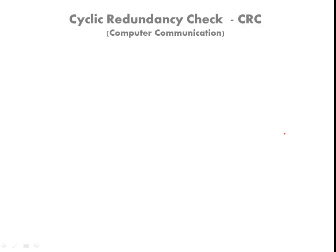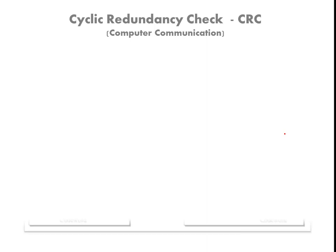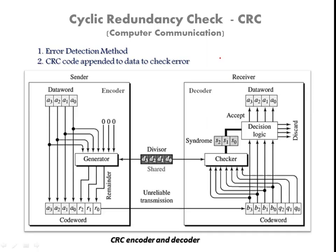In this video we are going to see Cyclic Redundancy Check. This is one of the error detection methods used in computer communication. When we send bits as electromagnetic signals through a transmission medium, due to external disturbances the signal gets disturbed, and this leads to error at the receiver side.